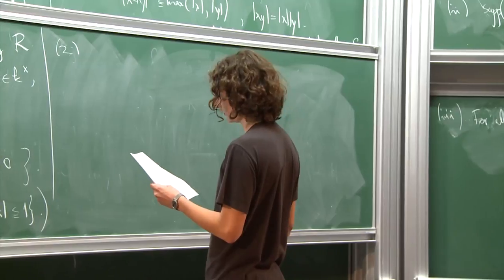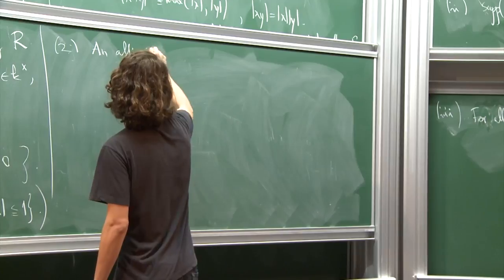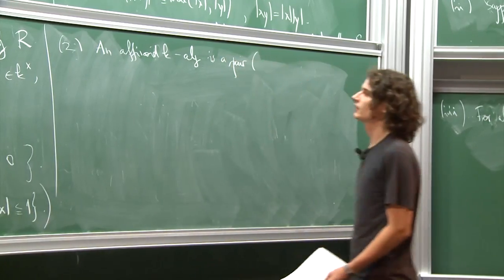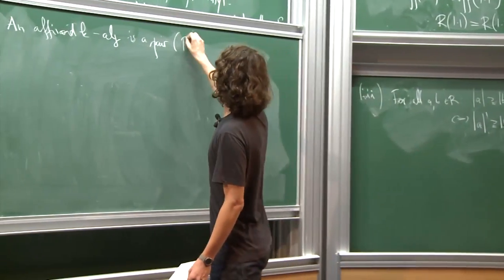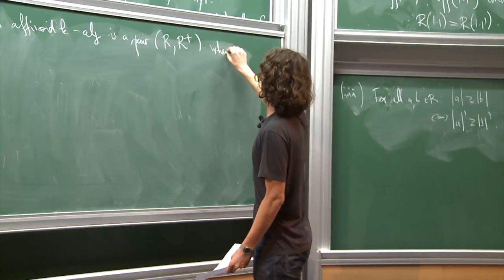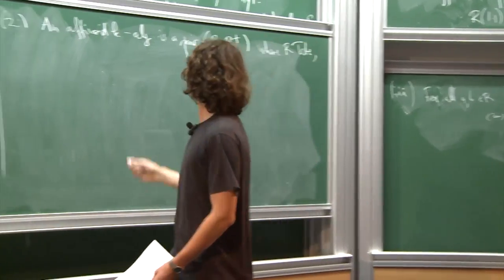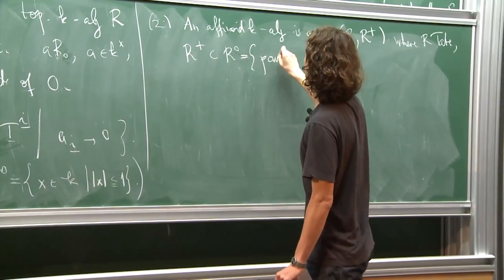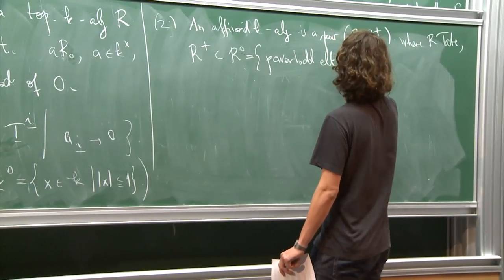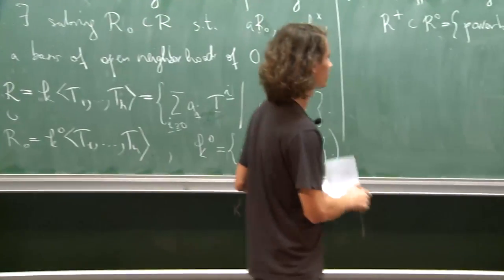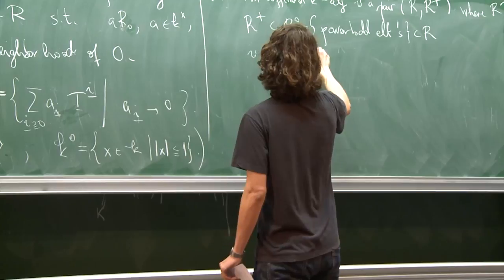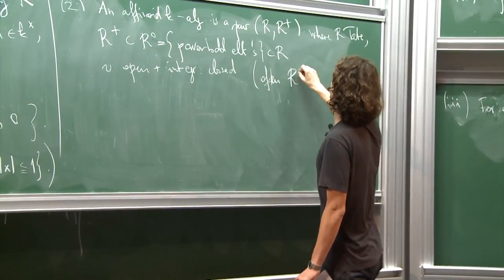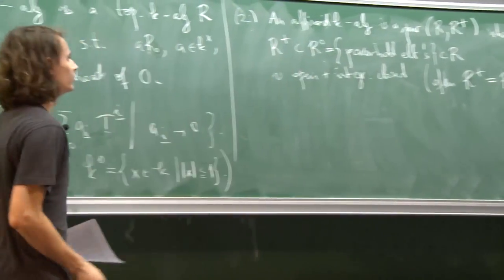An affinoid K-algebra is a pair (R, R+), where R is a Tate K-algebra. Spaces in Huber's setup are not associated to a single ring but to a pair of rings. Here R+ is a subset of R° — which is defined to be the set of power-bounded elements — and R+ is an open and integrally closed sub-ring. In all cases of relevance in rigid analytic geometry, it will just be the ring of power-bounded elements, so it's not of great importance.